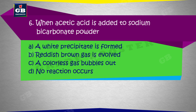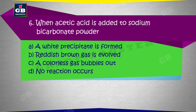When acetic acid is added to sodium bicarbonate powder — acetic acid sodium bicarbonate powder mein joda jaata hai: a) A white precipitate is formed, b) Reddish brown gas is evolved, c) A colorless gas bubbles out, d) No reaction occurs.